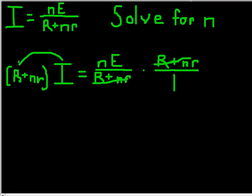So I times R is IR, and then plus I times nR is INR. So we're going to rewrite this as IR plus INR.